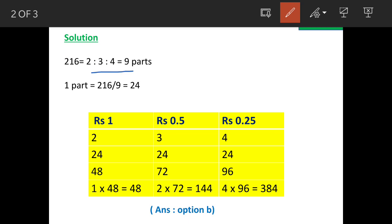We have seen that there are total 9 parts of 216, and 1 part will be equal to 24 rupees. Now we have got 1 rupee, 50 paisa, and 25 paisa. 1 rupee, as per question, there are 2 parts forming 2 parts of total amount. 50 paisa are forming 3 parts of total amount, and 25 paisa are forming 4 parts of total amount.